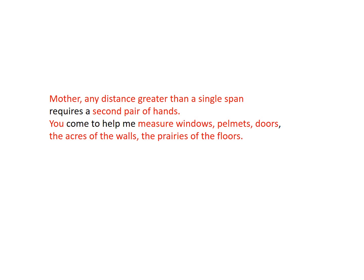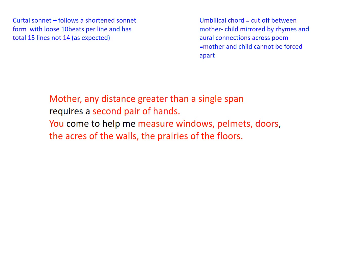The first revelation is that this is a sonnet — specifically a curtail sonnet. It follows a shortened sonnet form with a loose 10 beats per line and a total of 15 lines, not the 14 we'd expect from Shakespearean or Petrarchan sonnets. The image that springs to mind is the umbilical cord, and there's a cutoff between mother and child that's mirrored by the rhymes and connections across the poem — as if the mother and child cannot be forced apart, even if at times it's uncomfortable to read.